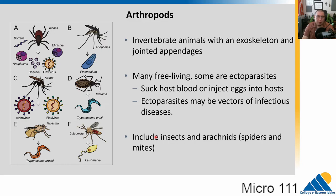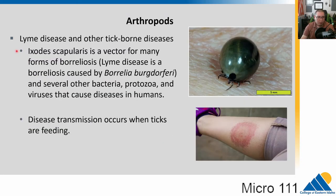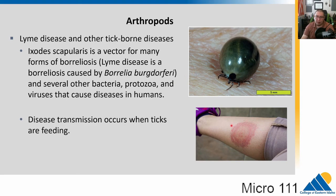Ticks are a big one, particularly if you like to go outdoors. These are common arthropod vectors in our area and can spread things like Lyme disease and other tick-borne diseases. Lyme disease is caused by the bacteria Borrelia burgdorferi, and the vector is a tick. When the tick is feeding, some of the bacteria gets injected into the human. Ticks feed on deer and similar animals, pick up the bacteria, then transmit it to humans. The first symptom and sign of Lyme disease is a big bullseye-shaped rash.